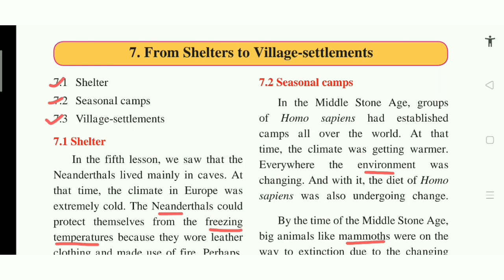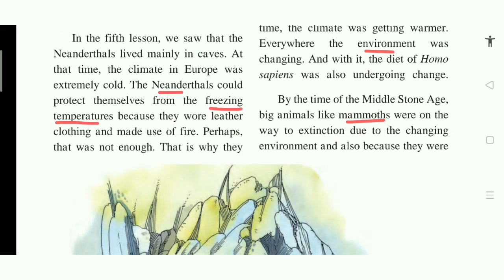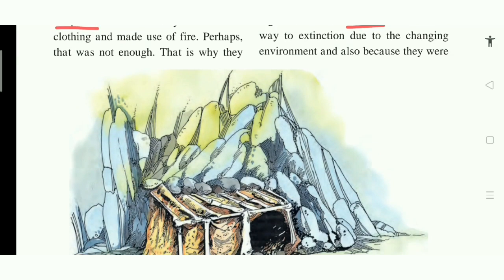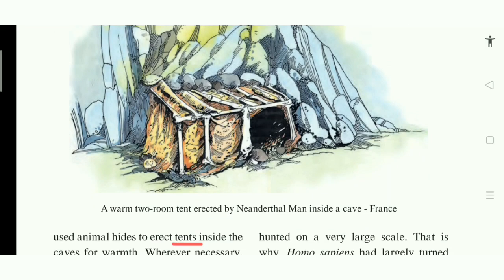Children, in the beginning of the middle stone age, the climate in Europe was extremely cold. To protect themselves, Neanderthals wore leather clothes and made use of fire. But the temperature was so cold that perhaps it was not enough, and therefore they erected tents inside the cave so that they could keep themselves warm. You can see a tent erected by Neanderthal man inside a cave in your book.